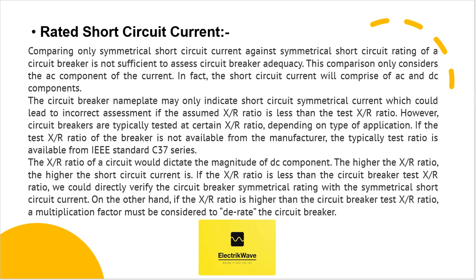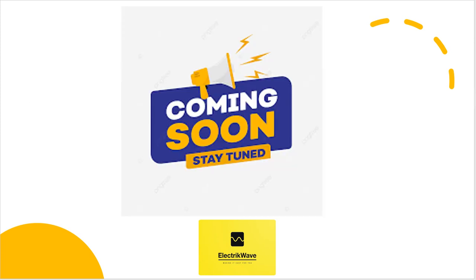On the other hand, if the X by R ratio is higher than the circuit breaker test X by R ratio, a multiplication factor must be considered to derate the circuit breaker. Stay tuned — we will discuss other technical topics in upcoming videos.